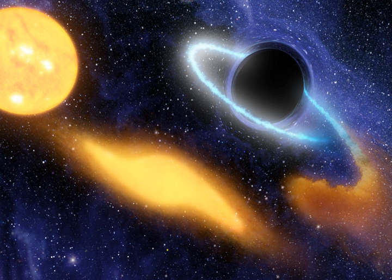Supermassive black holes have properties that distinguish them from lower mass classifications. First, the average density of a SMBH, defined as the mass of the black hole divided by the volume within its Schwarzschild radius, can be less than the density of water. This is because the Schwarzschild radius is directly proportional to its mass. Since the volume of a spherical object is directly proportional to the cube of the radius, the density of a black hole is inversely proportional to the square of the mass, and thus higher mass black holes have lower average density.